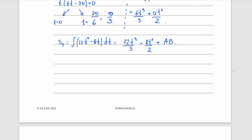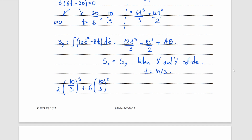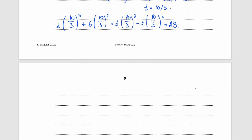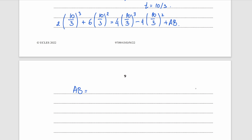When the particles collide, displacement of x equals displacement of y, and this happens when t equals 10 over 3. Substituting t equals 10 over 3 into both s_x and s_y and making them equal, rearranging gives AB equals 1000 over 27, which is approximately 37.